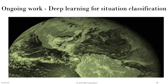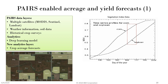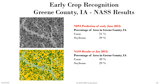The second use case is that these various layers can serve as features for deep learning, which we have used for situational classification. For example, we use PAIRS to do acreage and yield forecasts. Multiple satellite layers are used, including weather information, soil data, and historical crop surveys, with deep learning models producing acreage forecasts available as new layers. We achieved early crop recognition — accurately predicting corn and soybean acreage almost six months in advance.